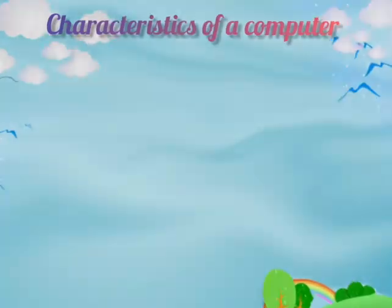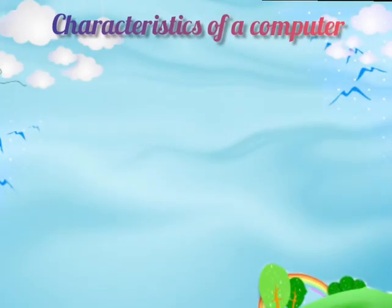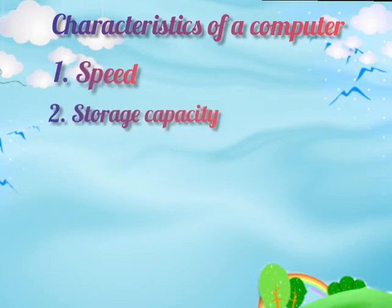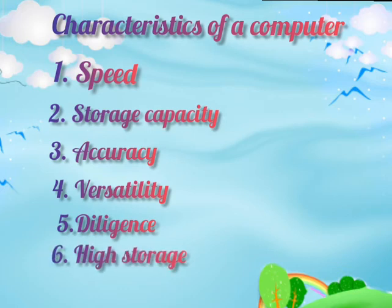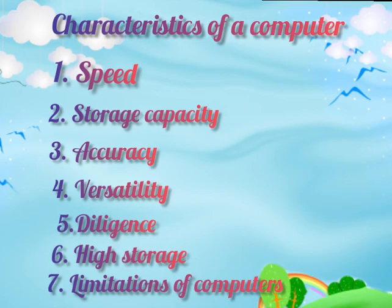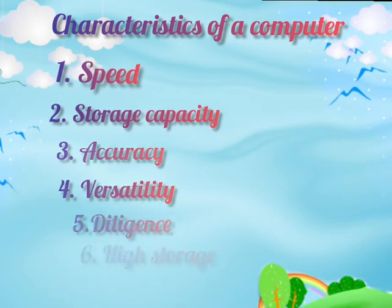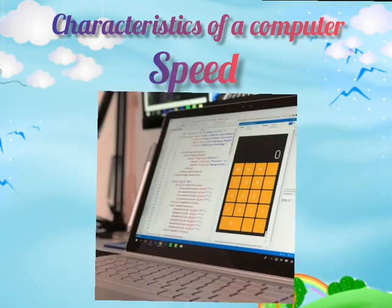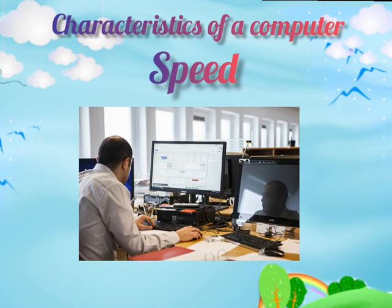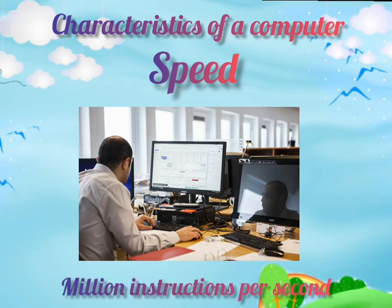Now we will see the characteristics of a computer. First, Speed. Second, Storage Capacity. Third, Accuracy. Fourth, Versatility. Fifth, Diligence. Sixth, High Storage Capacity. And seventh, Limitations of Computers. Regarding Speed: computers work at very high speed. A computer can perform various operations and mathematical calculations like addition and subtraction in a few seconds. The speed of a computer is measured in terms of millions of instructions per second.